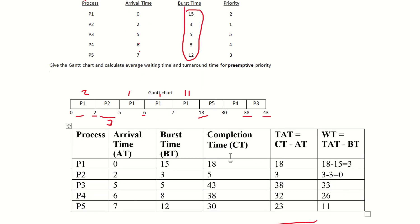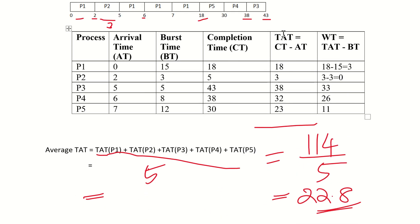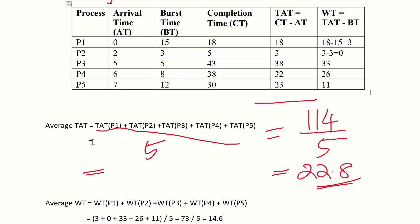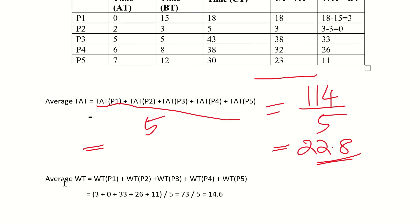From the Gantt chart we find the completion time. Completion time minus arrival time gives turnaround time. Turnaround time minus burst time gives waiting time. Then total turnaround time divided by number of processes gives average turnaround time, and total waiting time divided by number of processes gives average waiting time. Thank you.